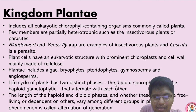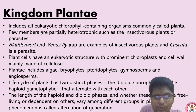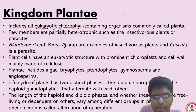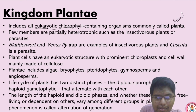Kingdom Plantae organisms are eukaryotic and contain chlorophyll — chlorophyll is a pigment. So these organisms which contain chlorophyll and are eukaryotes are coming in kingdom Plantae. Basically what we call as plants.